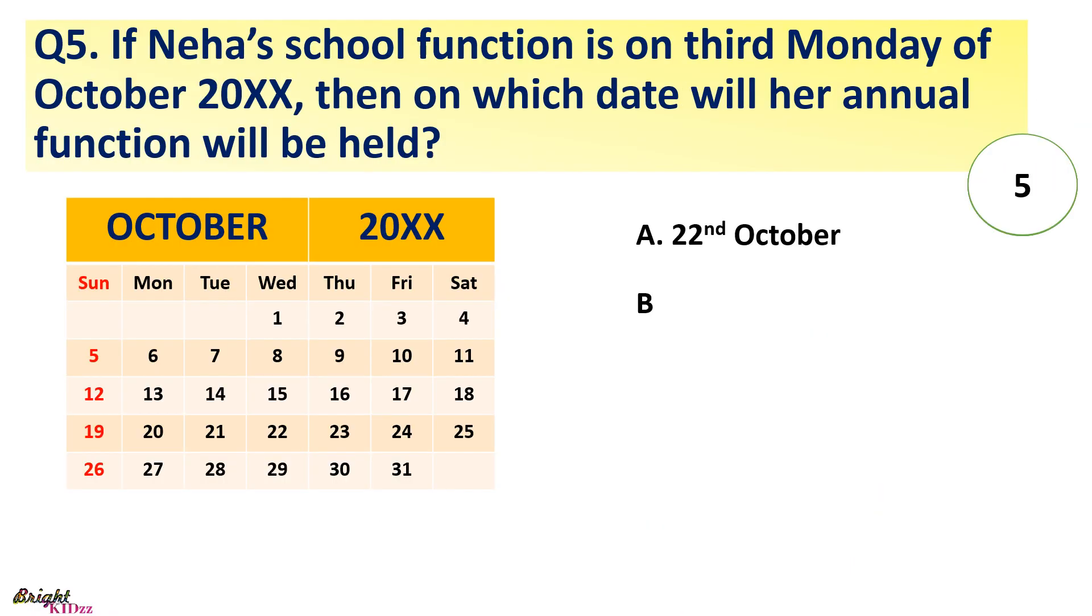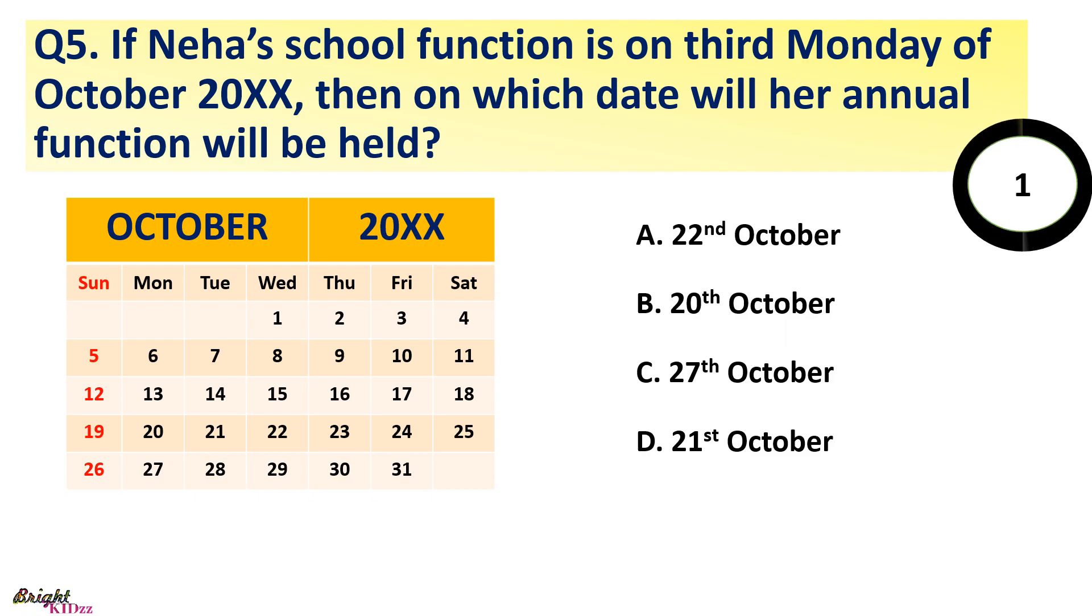If Nea's school function is on 3rd Monday of October, then on which date will be her annual function held? 22nd, 20th, 27th, or 21st October. We can see here 3rd Monday will be 2nd, 3rd. So answer is 20th October.